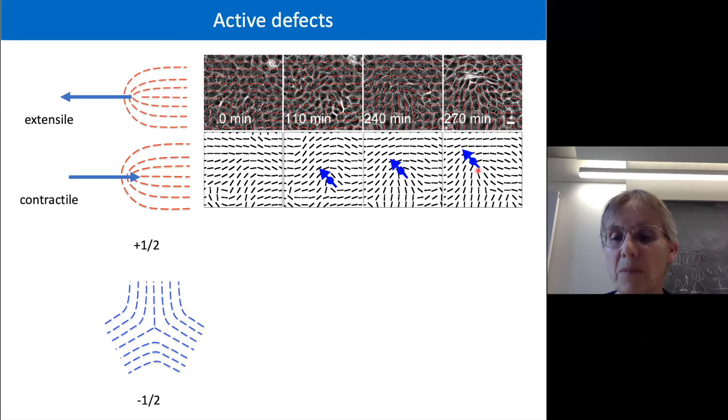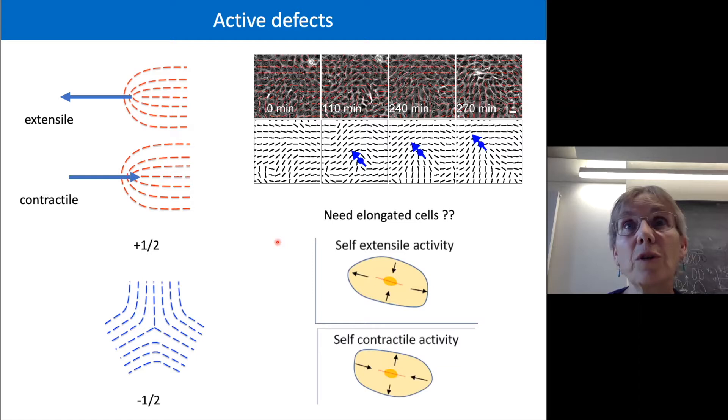And so that immediately gives us the first question, which confused us for a long time, which is that I've said that we need elongated particles to see this active nematic behavior and to see these defects, and cells are on average round. So that's a bit strange. But that's okay, because maybe you can have forces like this acting on a cell, which tend to elongate them.